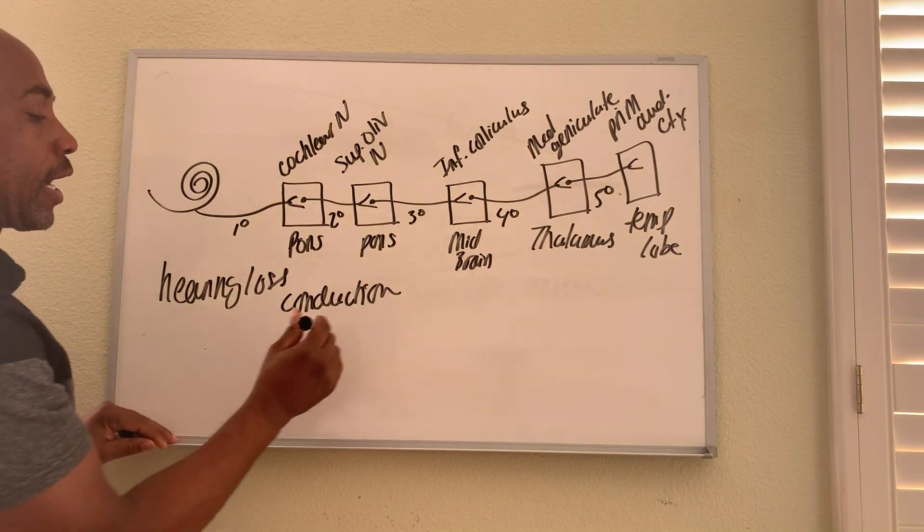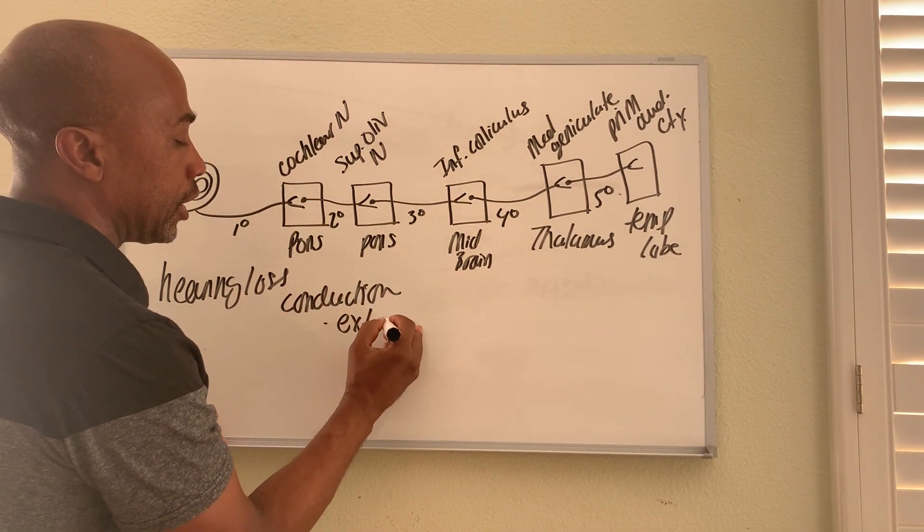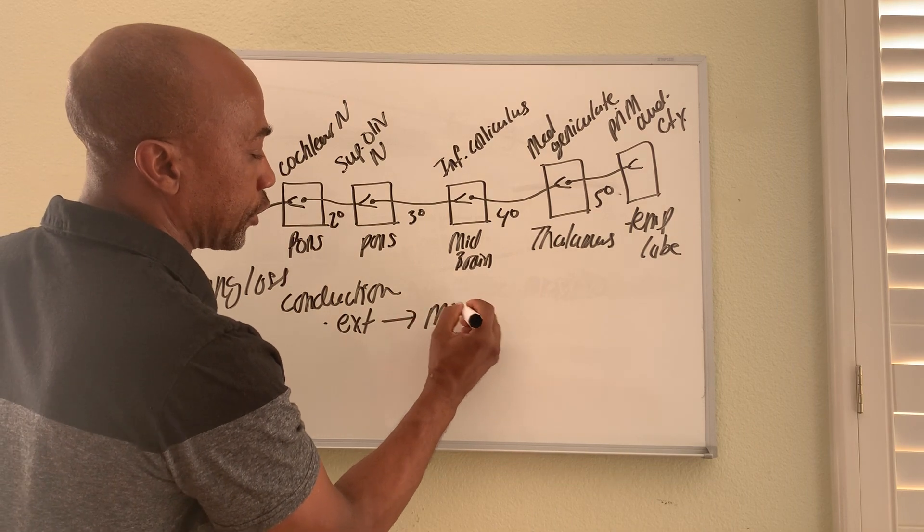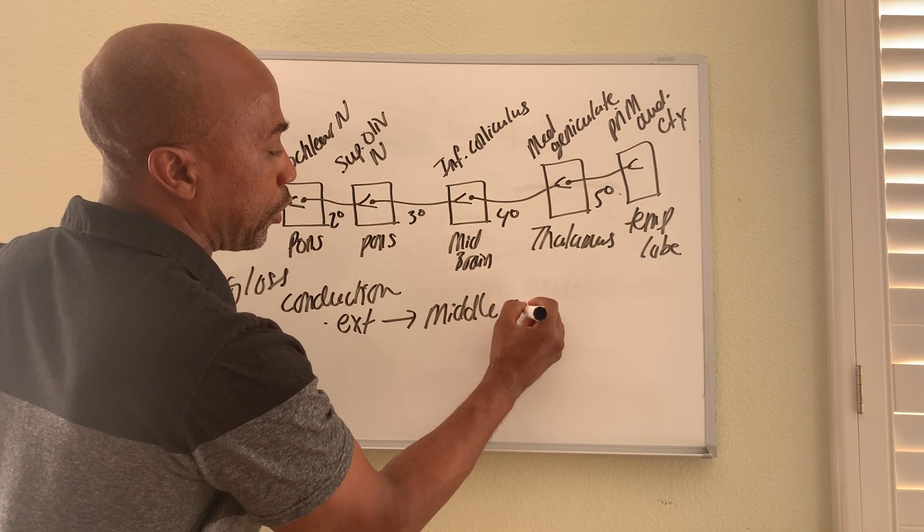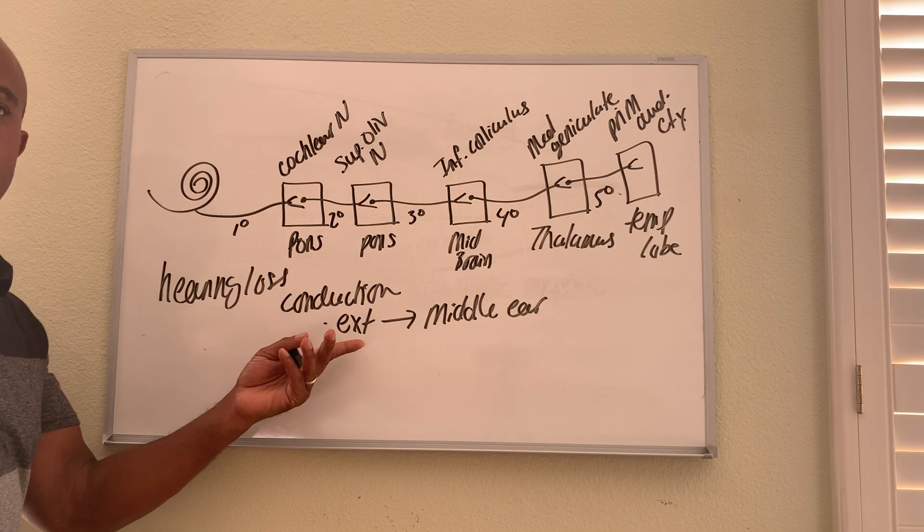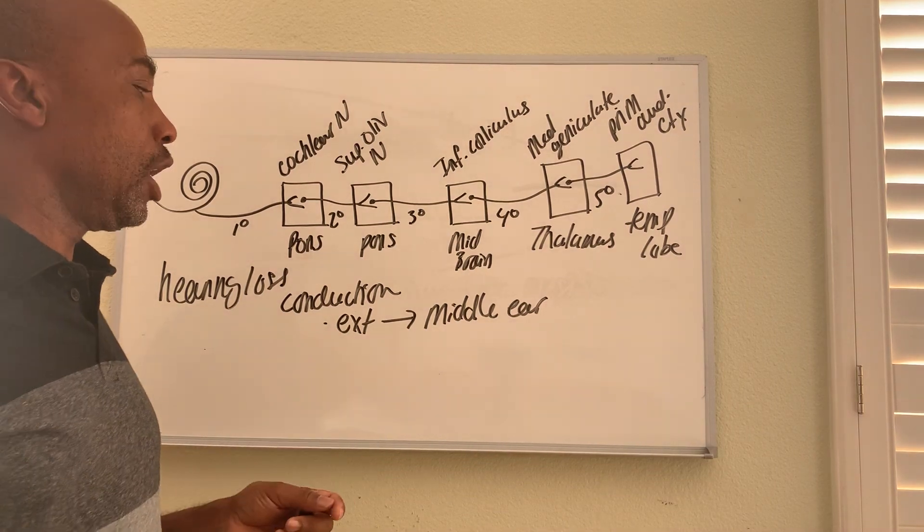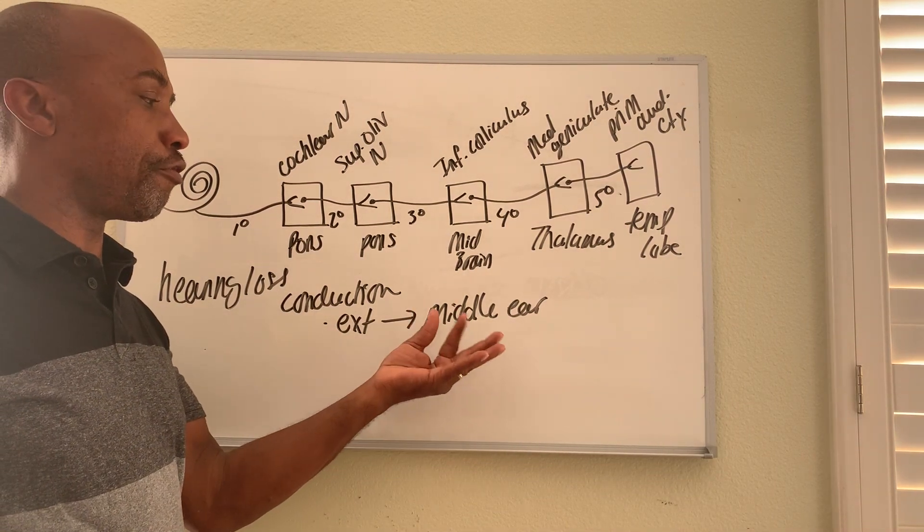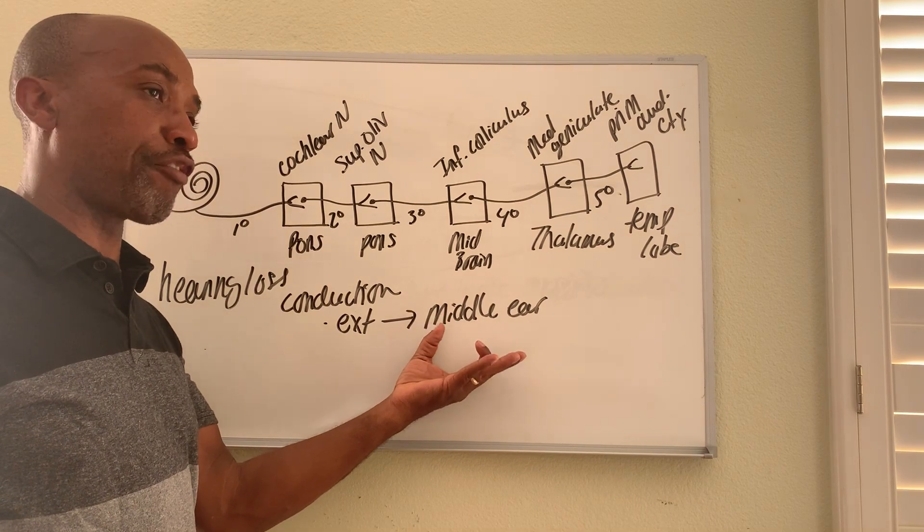This is when something goes wrong in the external ear all the way into the middle ear. Things like, for example, you may have wax in the ear in the external ear, or maybe your ossicles or bones are fused together so the bones won't vibrate freely.